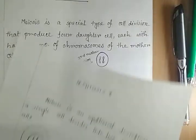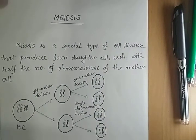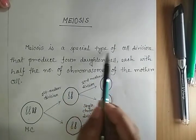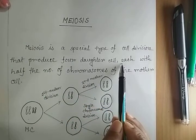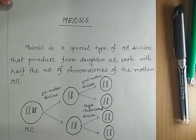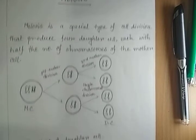Mitosis is also known as equational division. The third type of cell division is meiosis. Meiosis is a special type of cell division that produces four daughter cells with half the number of chromosomes of the mother cell. That means meiosis gives four daughter cells from a single mother cell, but the number of chromosomes in the daughter cells is less than in the mother cell.